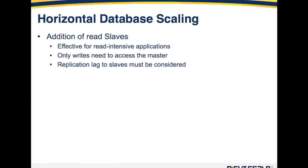The most straightforward form of horizontal database scaling is the addition of read slaves. Additional slave databases are added to handle the read load of the application. This is obviously effective for read-intensive applications, in that only writes need to access the master, and all reads can be distributed to the read slaves within the pool. Replication lag may be an issue and should be considered: if an application writes to the database and then quickly reads that same data object, replication to the slave servers may not have occurred yet, and they may return stale or outdated data. This needs to be considered in your application design.